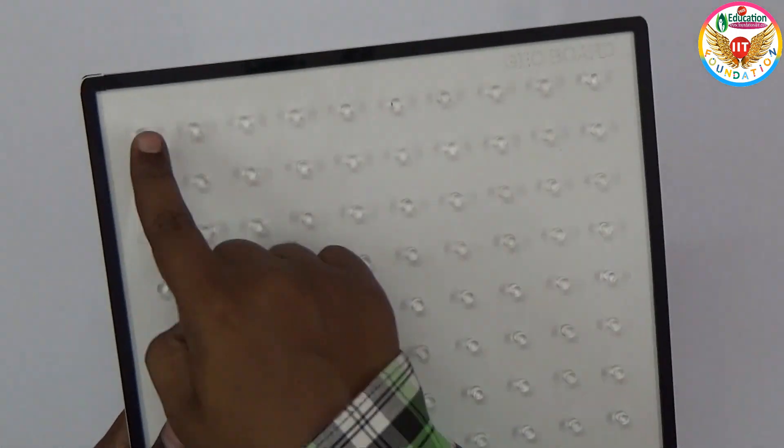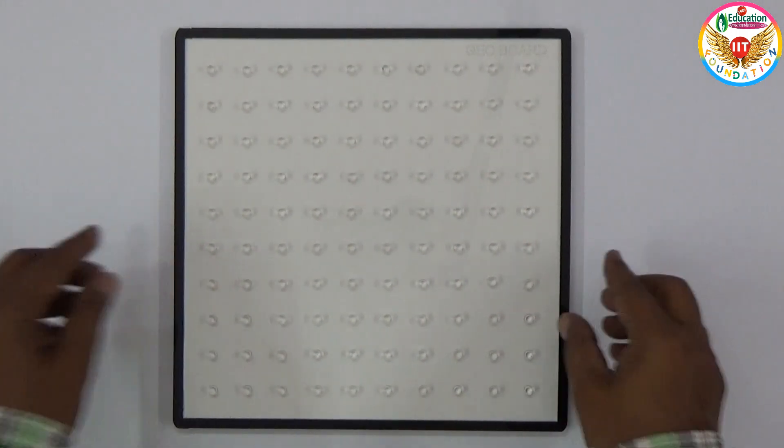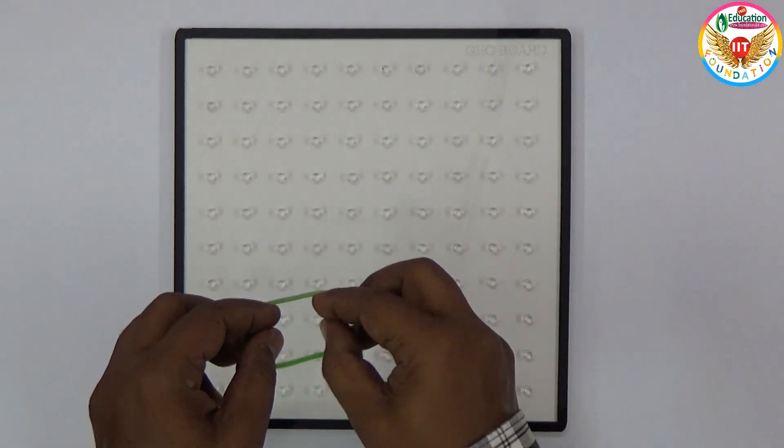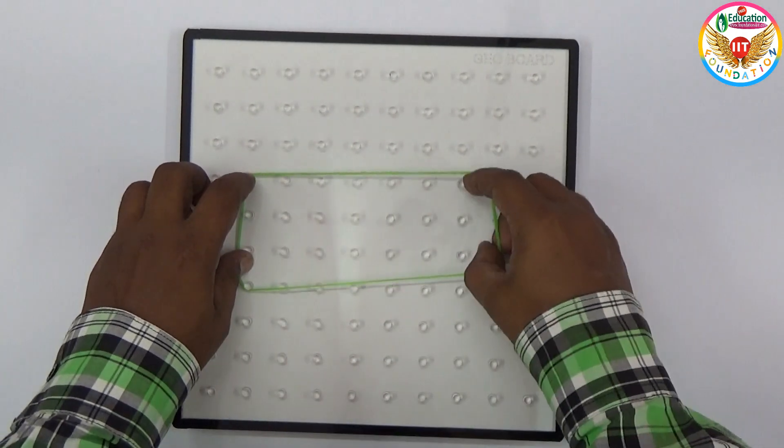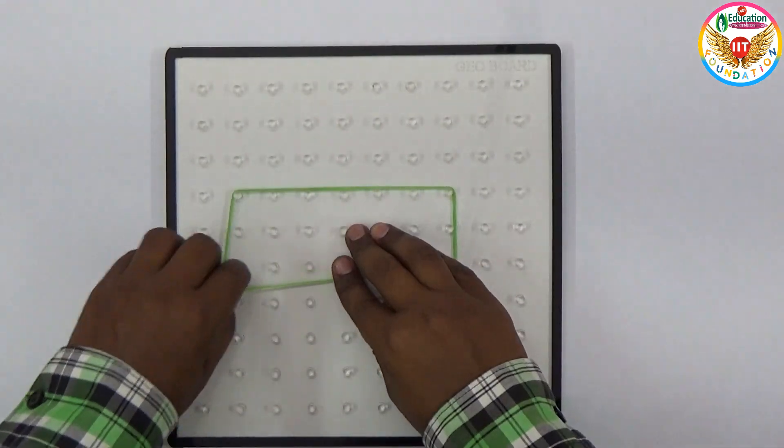This is a ten by ten board, with ten rows and ten columns arranged using pegs. Using rubber bands we can show different geometrical shapes.